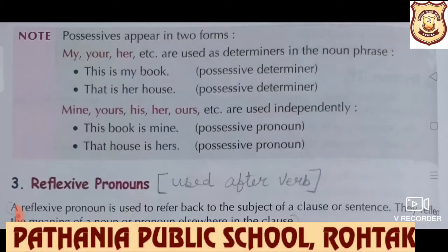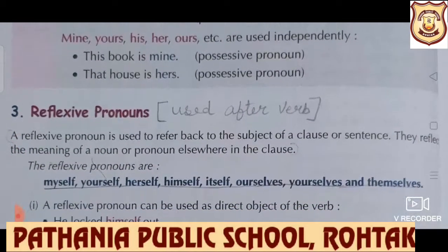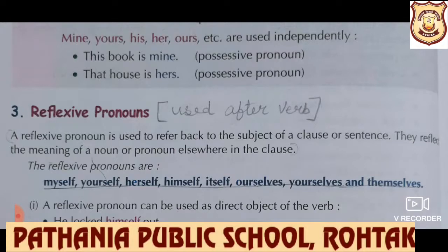Possessives appear in two forms: as determiners and as independent pronouns. 'This is my book. This is her house.' These two are examples of possessive determiners. And mine, yours, his, hers, ours, etc. are used independently. 'This book is mine. That house is hers.' Those are possessive pronouns used independently. Next type is reflexive pronoun.